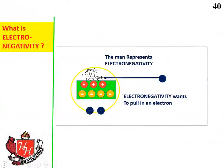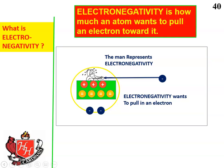Now we move on to electronegativity. What is electronegativity? Electronegativity is how much an atom wants to pull an electron towards it — an electron that it doesn't originally own; it's an electron from another atom, or one that's just floating out in space. The man in this illustration represents electronegativity — he's pulling the electron in towards the atom, not pulling it away.